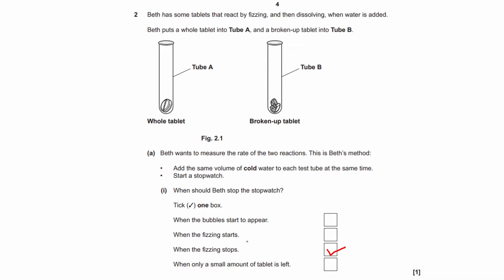Because in this reaction, we have fizzing happening. If there's no fizzing, that means the reaction has stopped. The other ones don't indicate if the reaction has stopped. For example, the first one, when the bubbles start to appear, it doesn't really say anything about bubbles appearing or disappearing. So in this reaction, it's about fizzing. When the fizzing starts, that's the start of the reaction. When only a small amount of tablet is left, again, the reaction has happened, so the tablet is decreasing, because it's reacting to produce product. But it's not completely disappeared. So this is also not a good indicator for the reaction stopping.